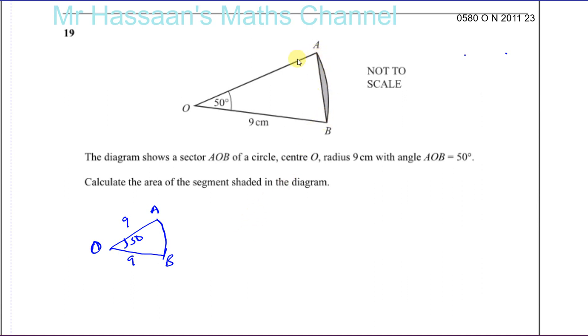If I find the area of the whole sector and subtract from it the area of this triangle OAB, I'll be left with the area of the segment. I'm going to take the area of that sector and subtract from it the area of this triangle, which is triangle OAB. Again, this angle is 50 degrees and this is 9, this is 9.